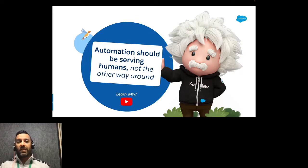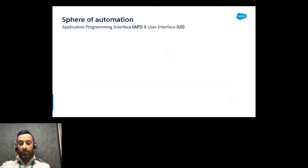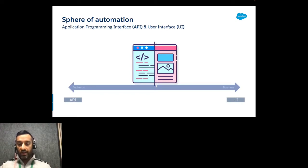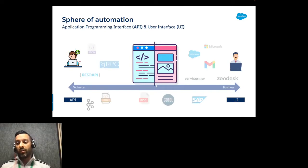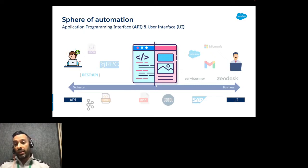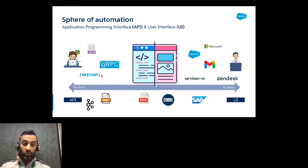Let's understand the spectrum of automation. As MuleSoft experts, you know automation can't be done only on UI. There's a spectrum: APIs on the more technical side, and UI on the business persona side. Business people have a better understanding of UI because they use these applications — SAP, ServiceNow, Salesforce — every day.